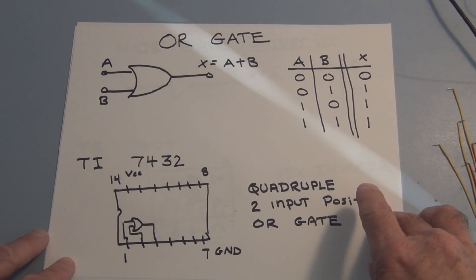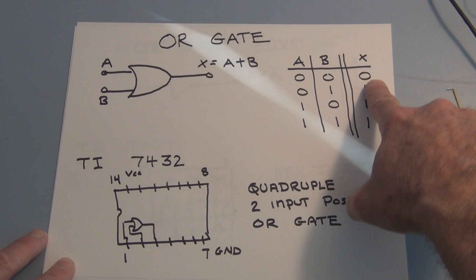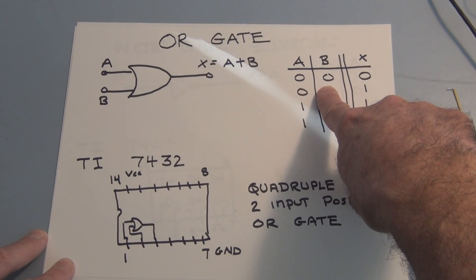So let's take a look at the truth table. And as you can see, there's a difference between the OR gate and the AND gate. On the OR gate, the output will be high whenever any one or both of the inputs are high. It will only be low or zero when both inputs are zero.